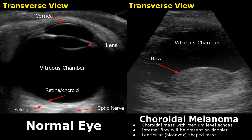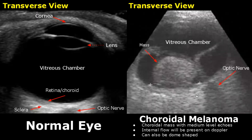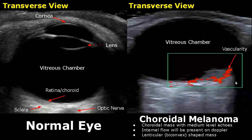Choroidal melanoma is an intraocular tumor. We will see a choroidal mass with medium-level echoes, and when we apply color Doppler, we will find internal vascularity. The most common shape of this tumor is lenticular or biconvex. It can also be dome-shaped, and choroidal detachment may also be seen. Here is an image of choroidal melanoma with Doppler applied showing vascularity inside the mass.